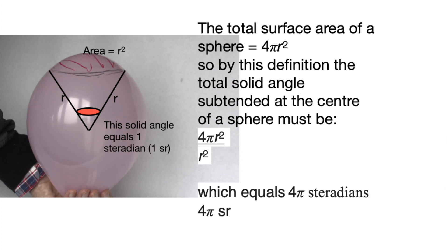And just to quickly add, the total surface area of a sphere is 4πr². So by this definition, the total solid angle around the center of a sphere must be 4πr² divided by r², which equals 4π steradians.